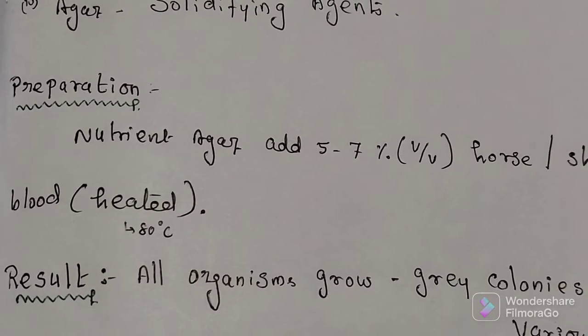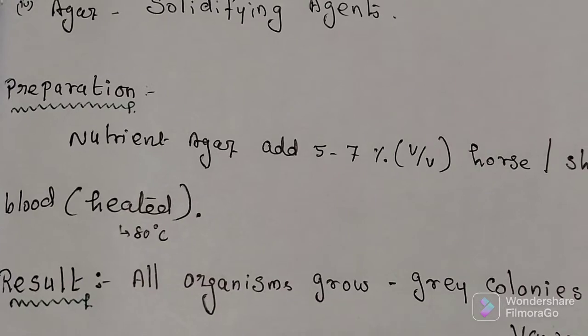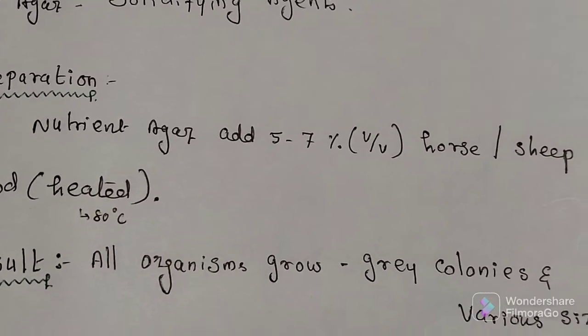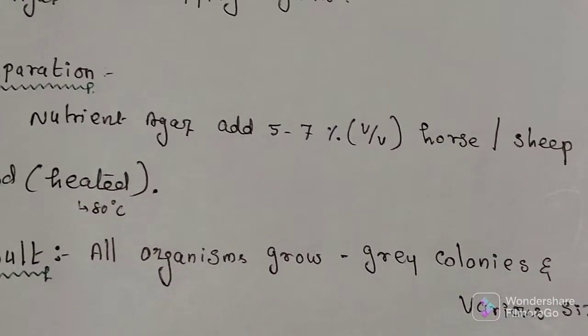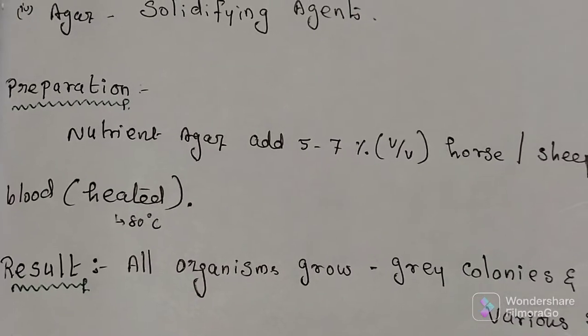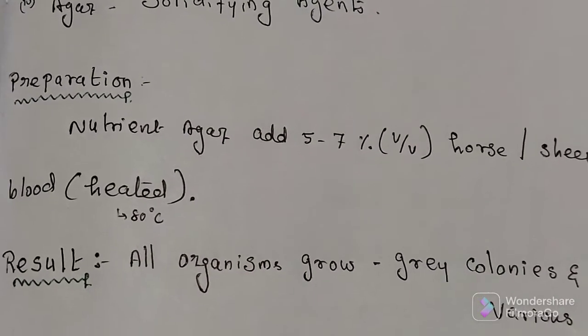Chocolate agar medium preparation. We prepare nutrient agar, then we will add 5 to 7 percent of horse or sheep heated blood we will add. Then result.